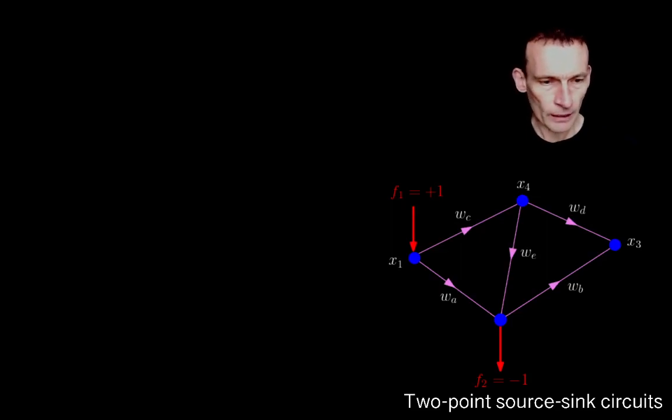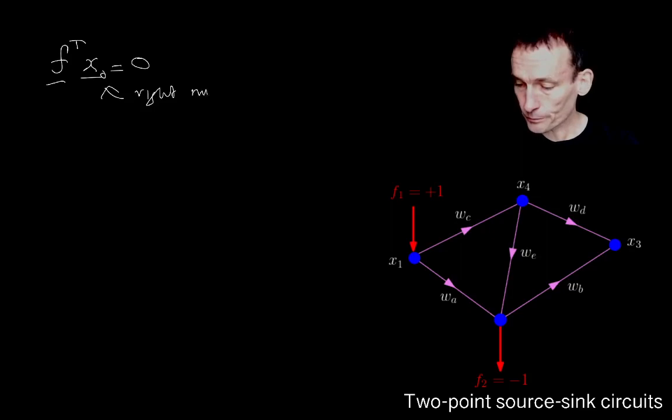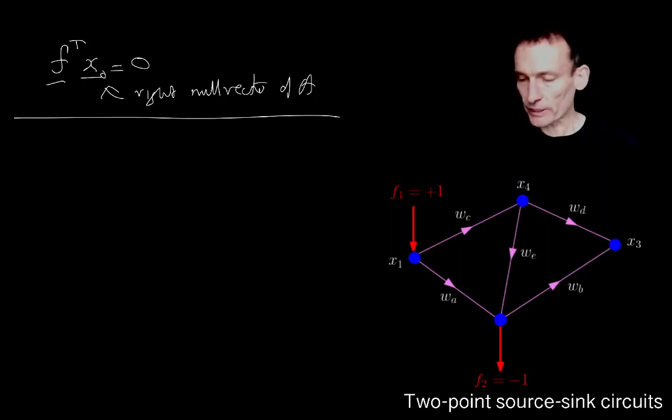I am not going to draw that. I'm just going to say that the divergence at node one is plus one and the divergence at node two is minus one. And that is such that it satisfies the condition. Remember that F transpose X naught is zero, where X naught is the right null vector of A. So we expect to find a nice solution to this.